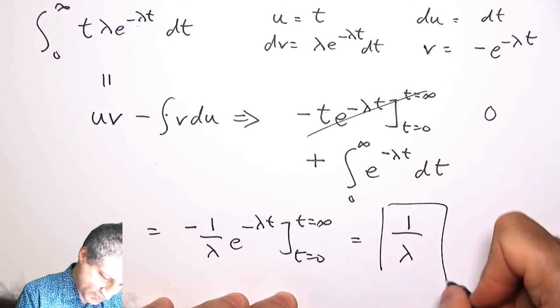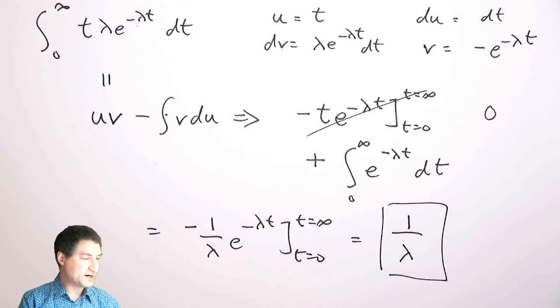So I did all this work to find out the expected value of the exponential random variable is one over lambda. And so this kind of makes sense because remember when we defined the exponential random variable, we said that lambda was basically the number of expected arrivals per second. And so the expected value then is the expected number of seconds per arrival, which is the inverse.